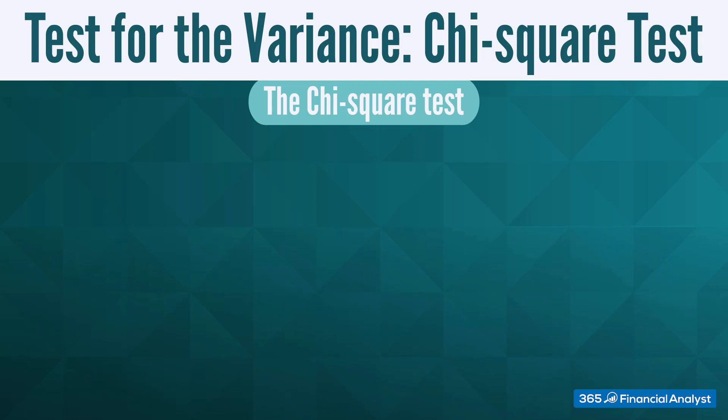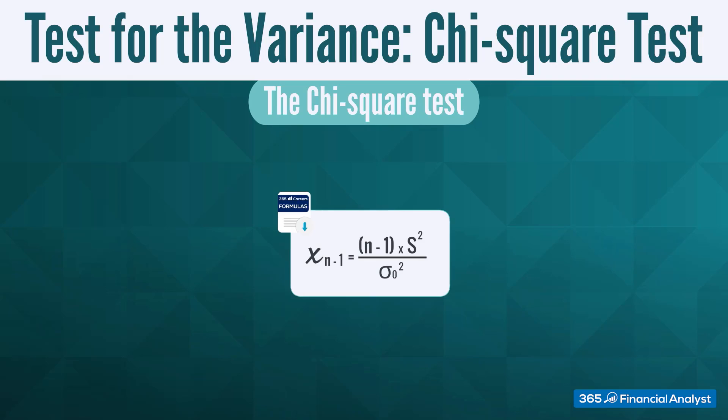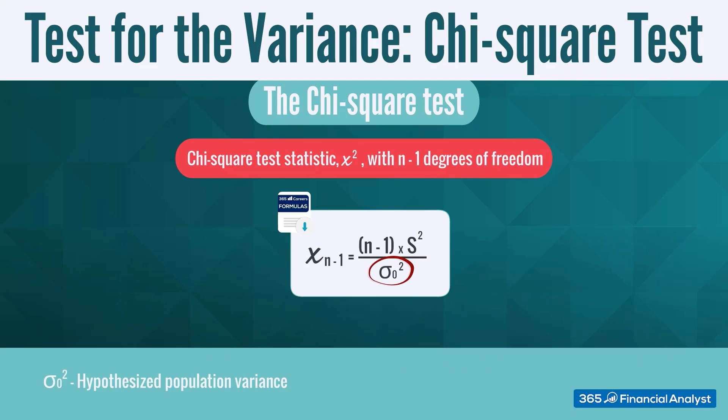Let's take a look at the formula itself. The chi-square test statistic is designed in the following way: at n minus 1 degrees of freedom, it is computed as n minus 1 times s-squared divided by sigma-0-squared, the hypothesized population variance. s represents the sample variance, given that we don't really know the true population variance.